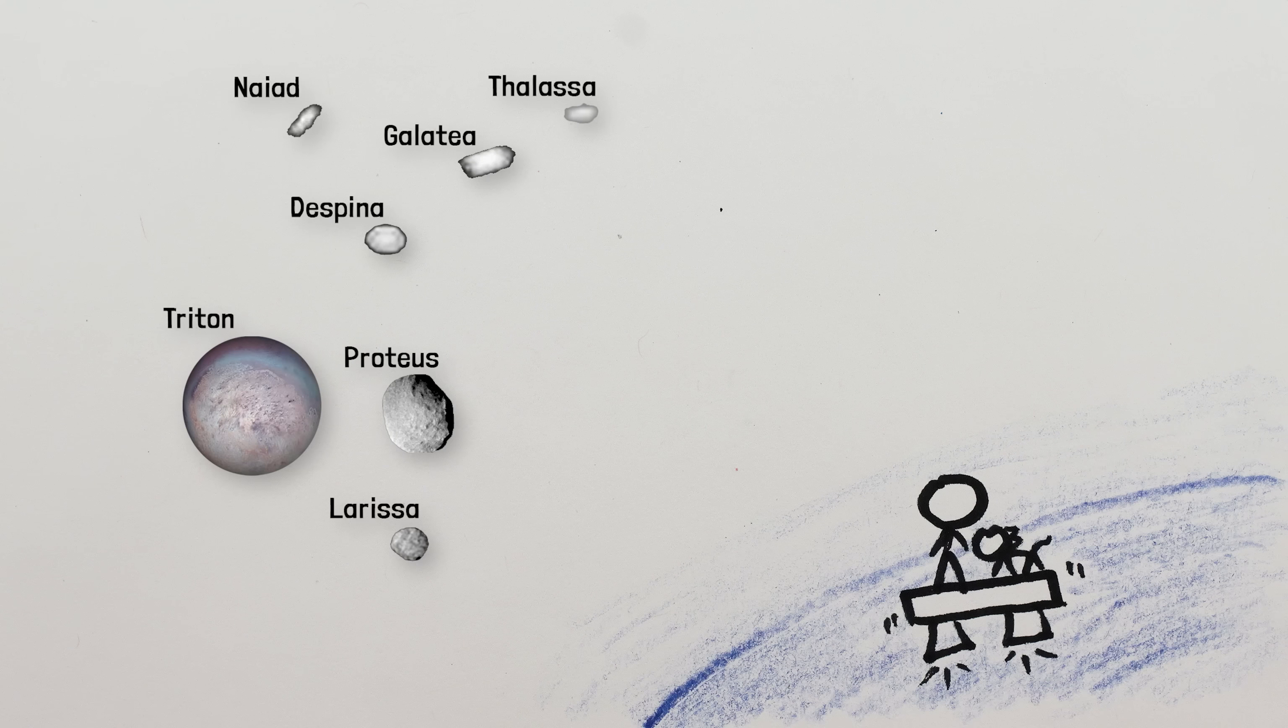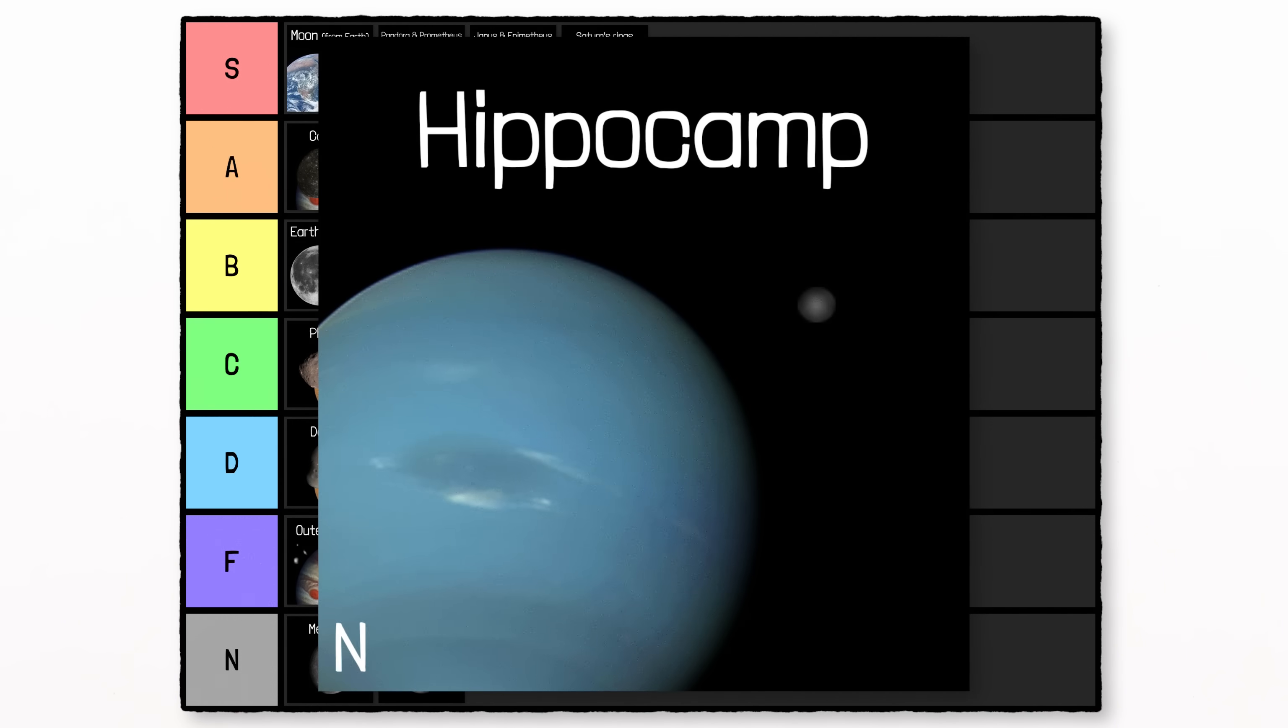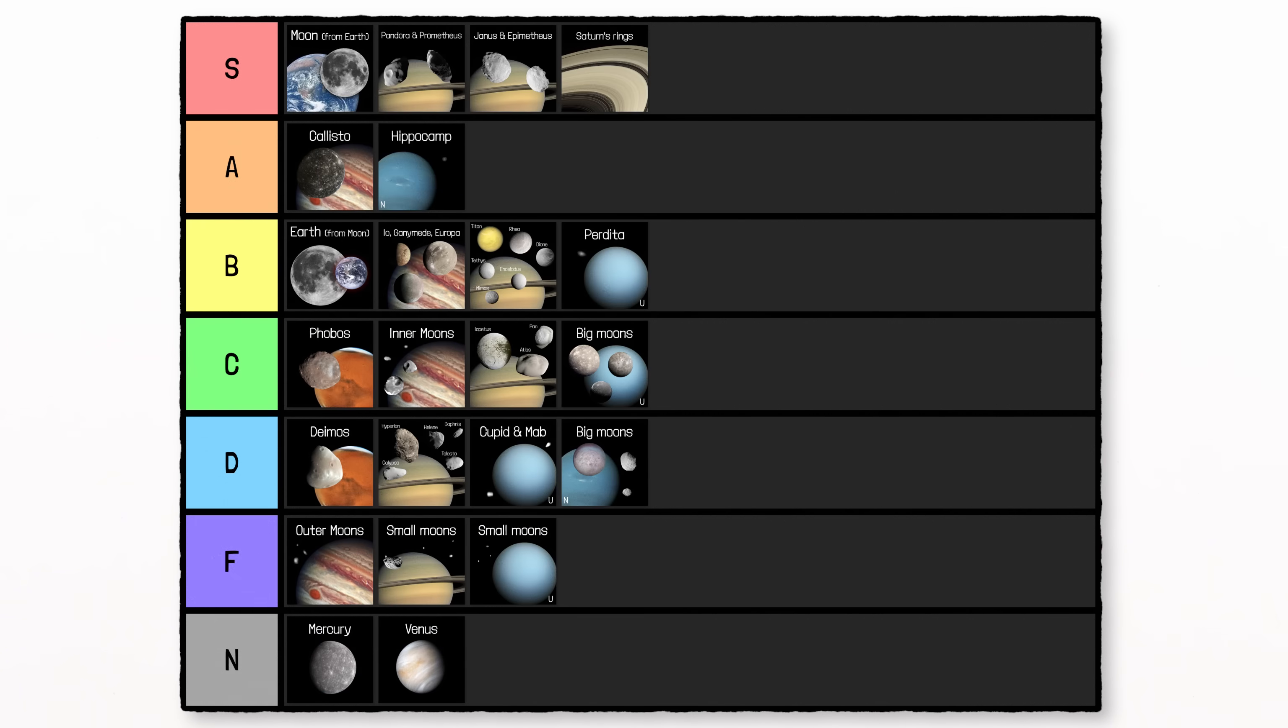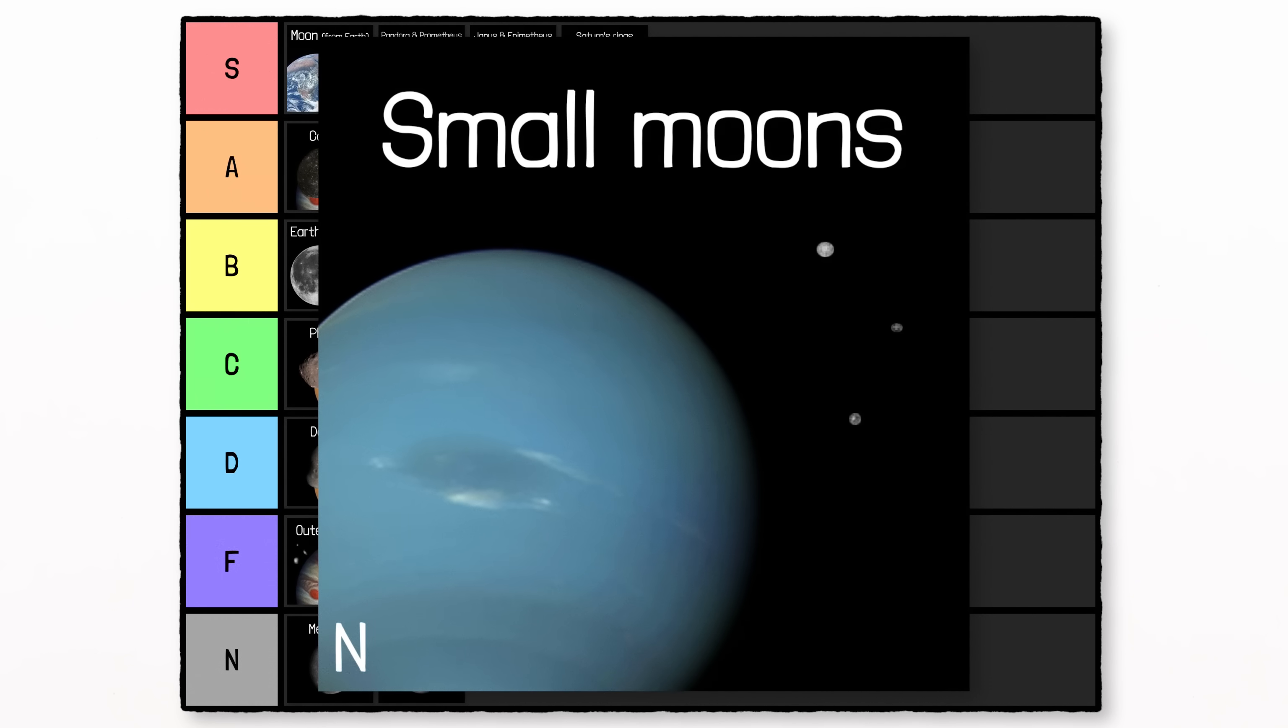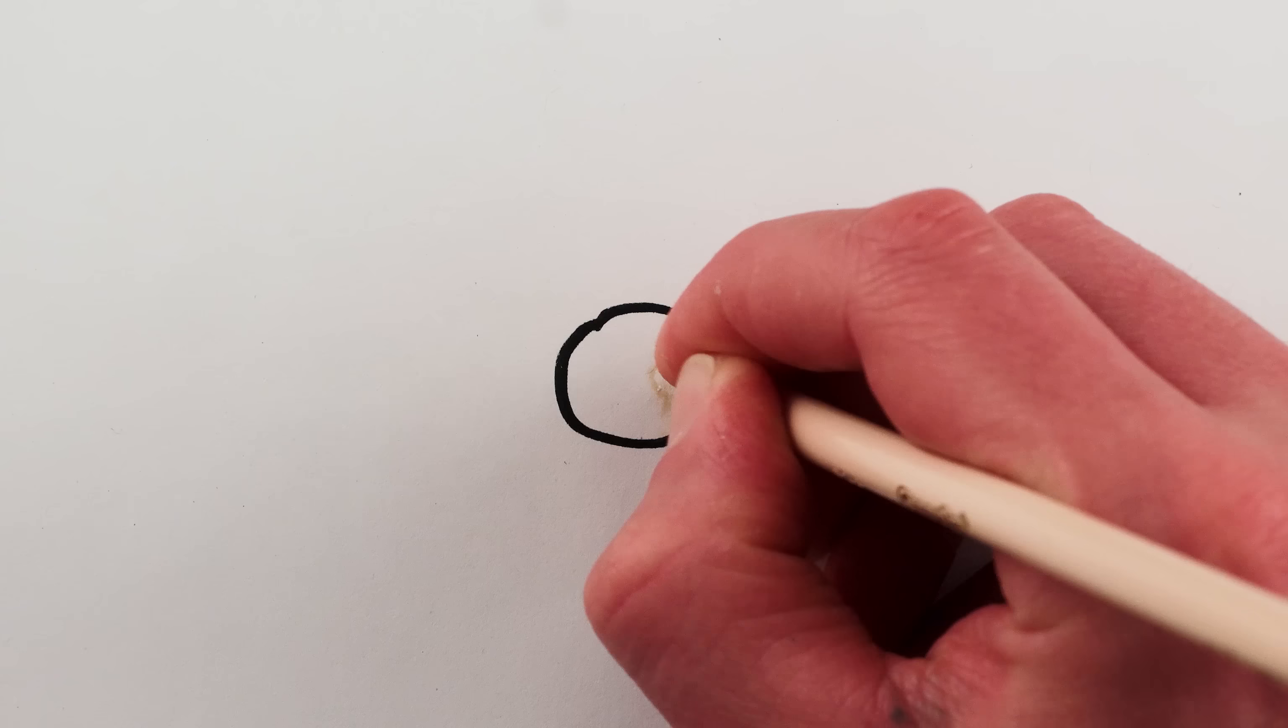Neptune isn't much better. Seven of its moons appear way too big and completely block the sun. D-tier. Hippocamp is actually a great size, appearing just barely bigger than the sun, and probably has a 360-degree sunrise, views of the corona, and the rest. Again, B-tier because of how small the sun is. The rest of Neptune's known moons are too small to see. F-tier.